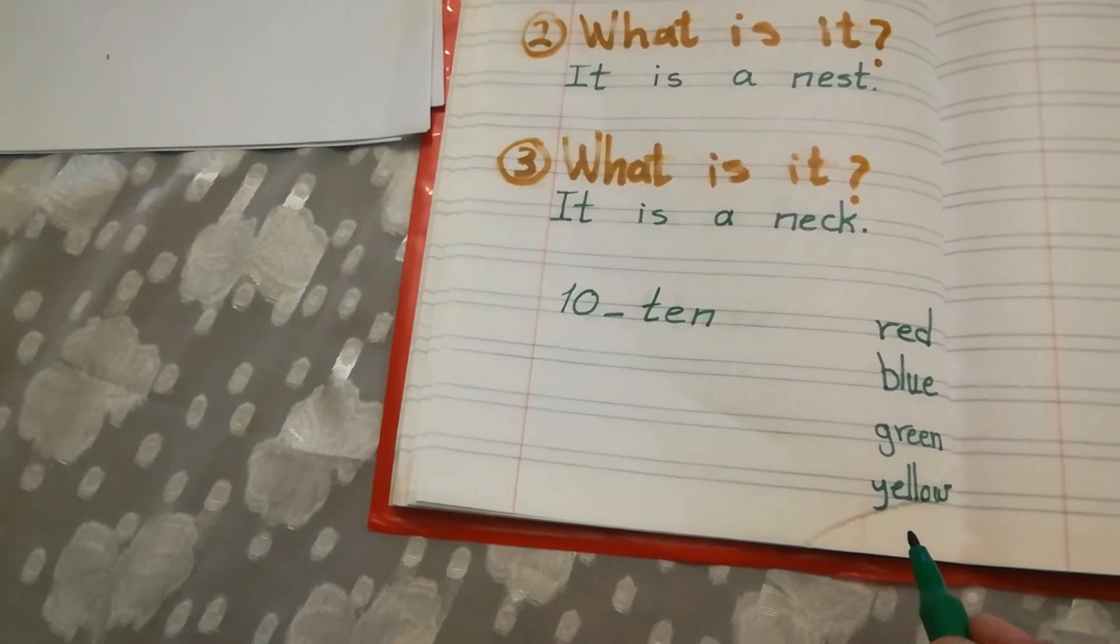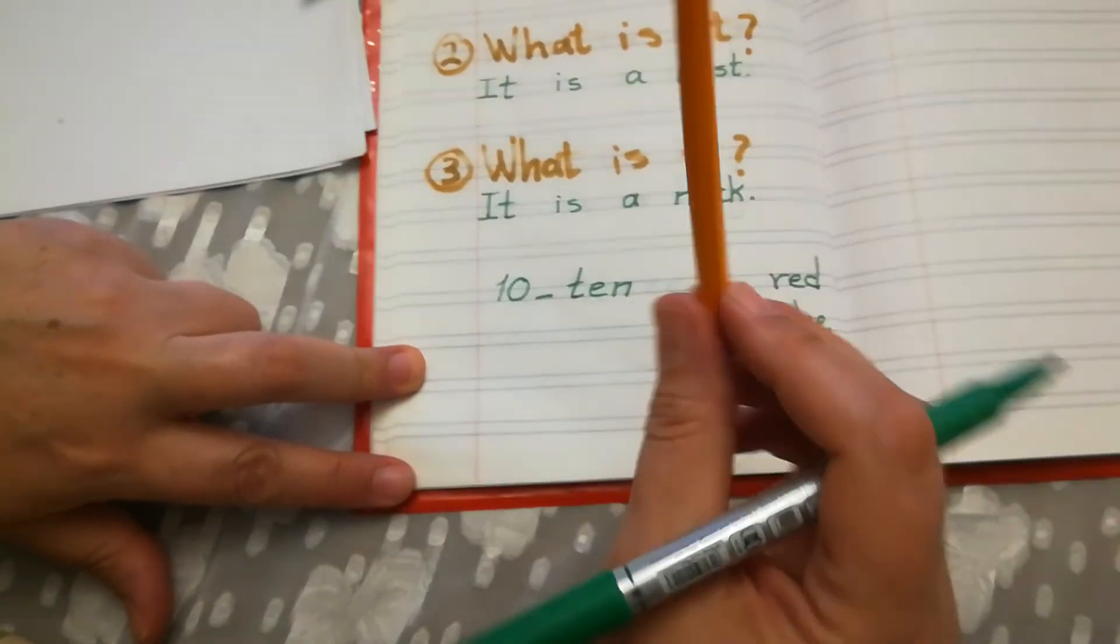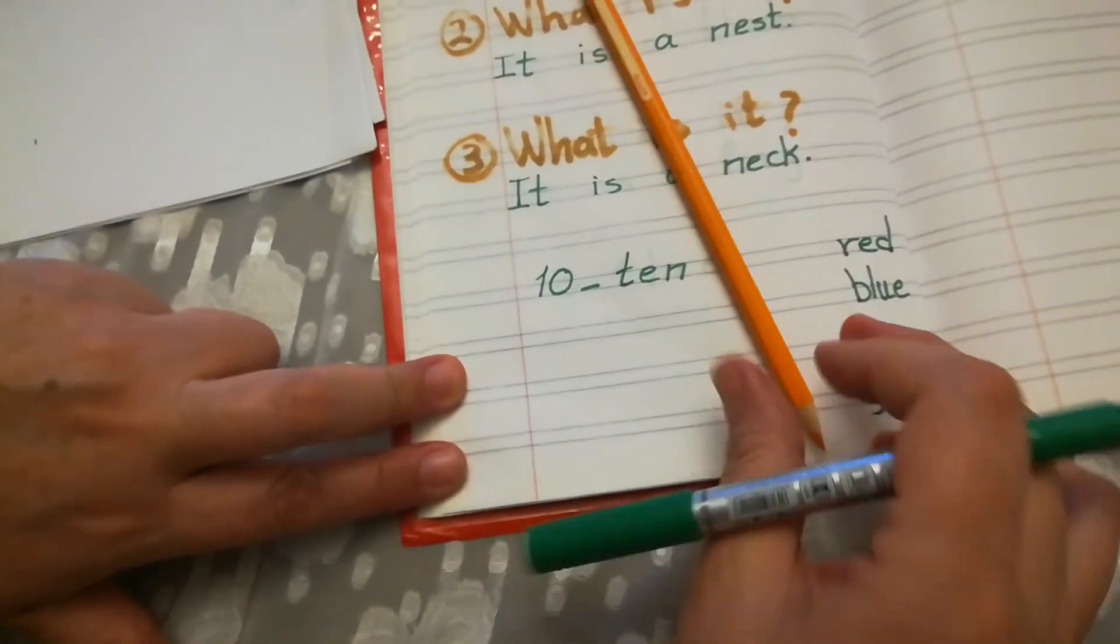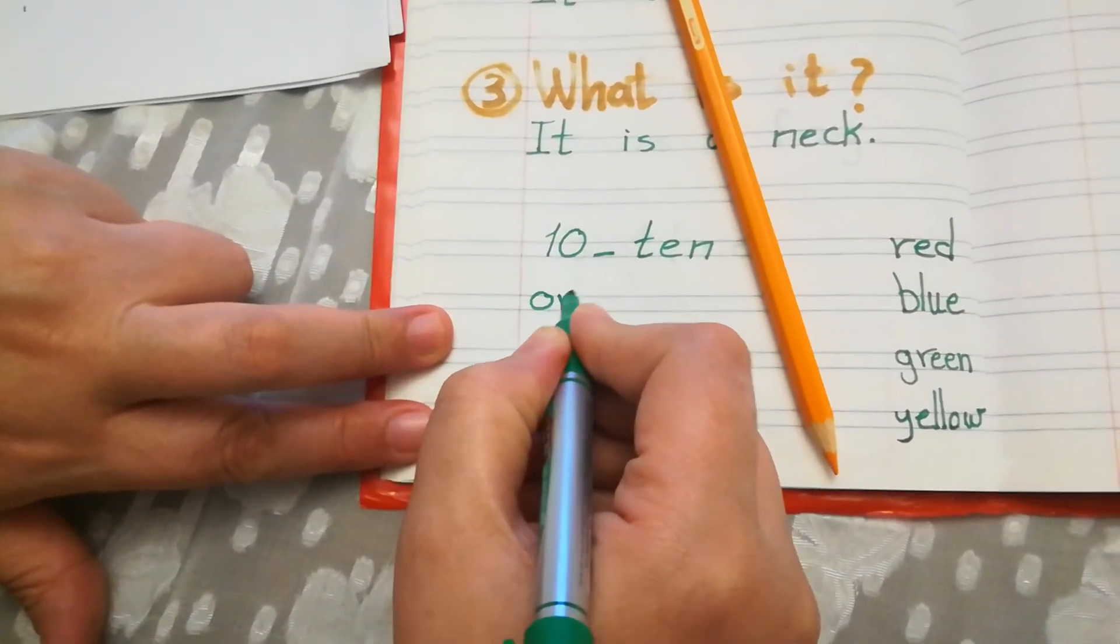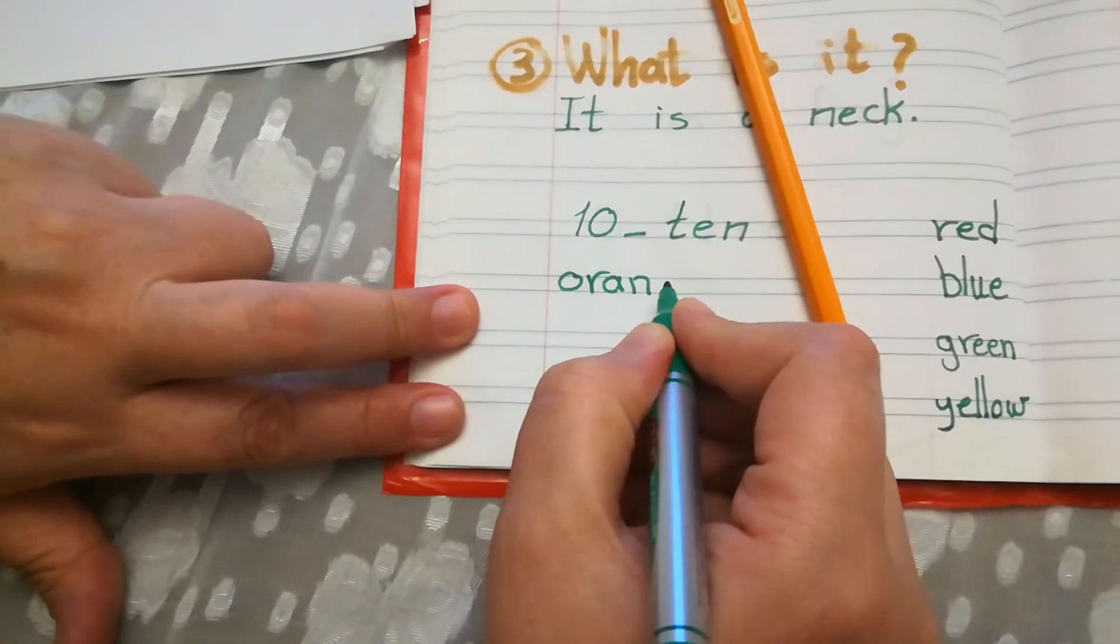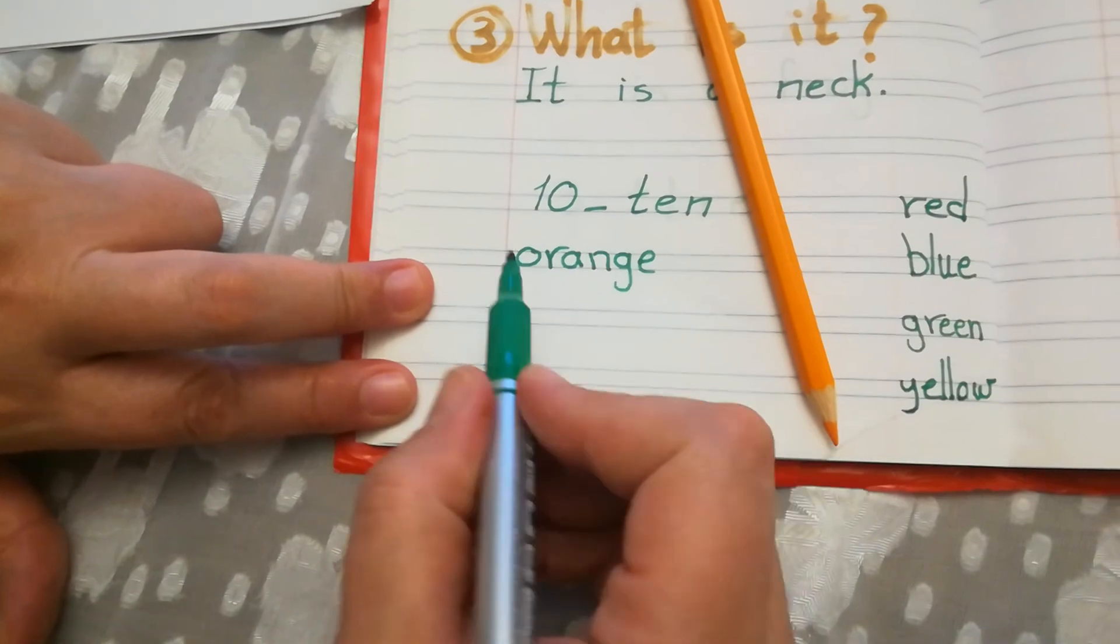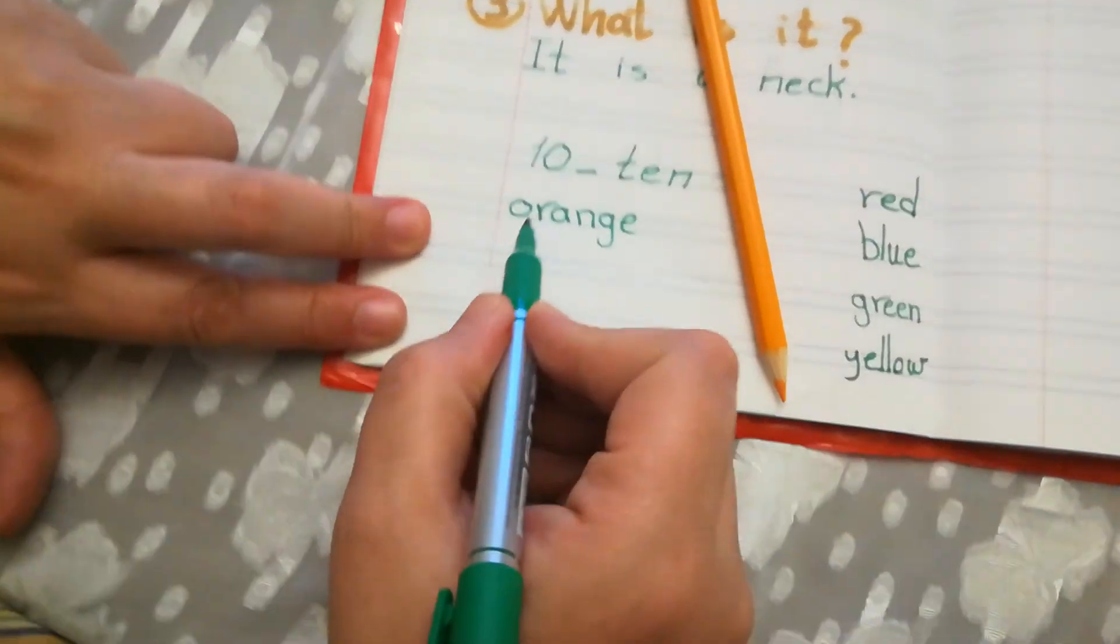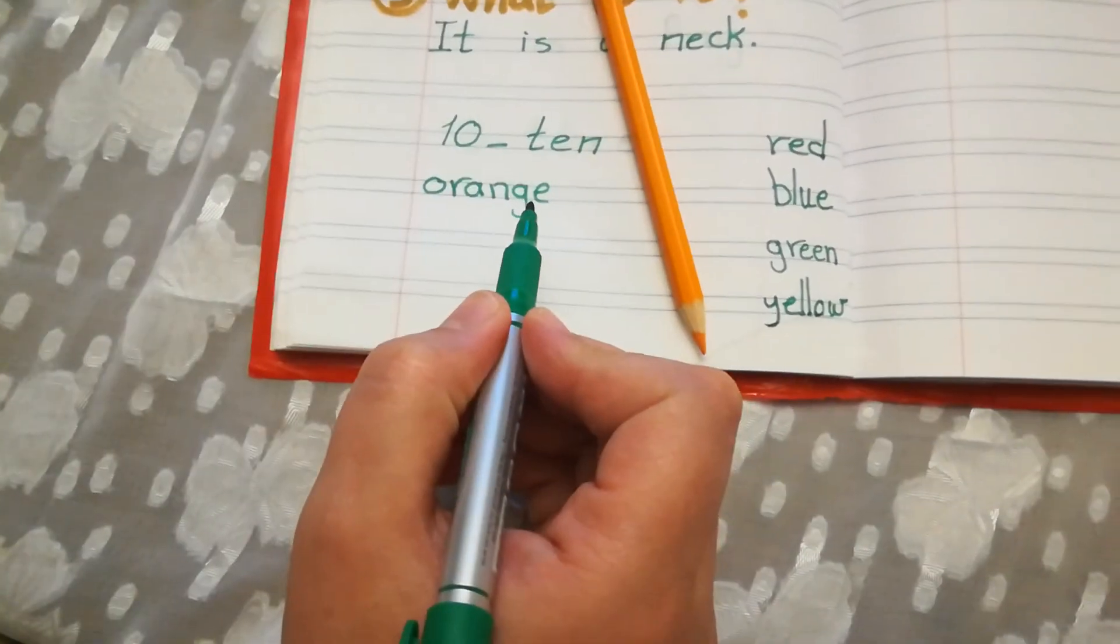Today we are going to learn how to write this color. What is this? Orange. Excellent. Orange. How to write orange. O-R-A-N-G-E. Orange. O-R-A-N-G-E. Orange. Thank you, KG2.